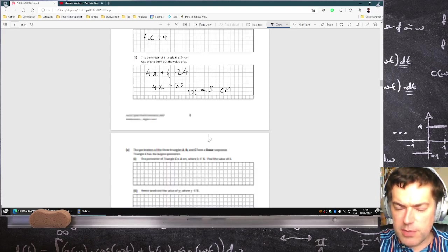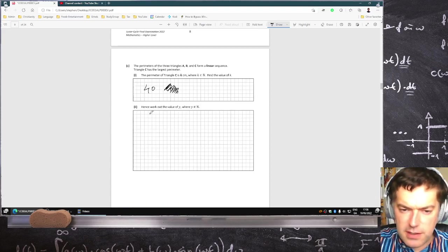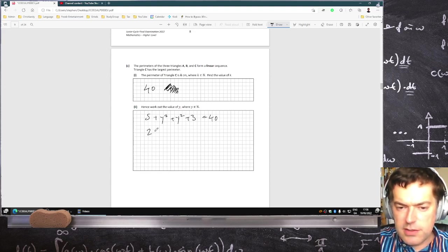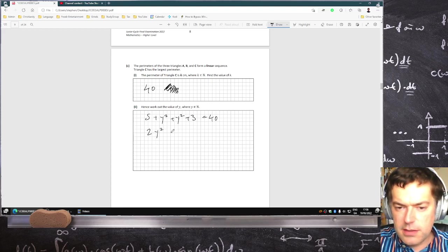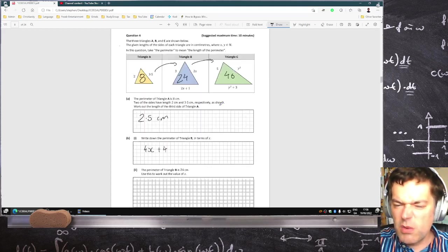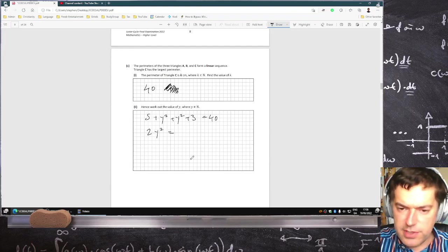5 plus y squared plus y squared plus 3. 5 plus y squared plus y squared plus 3 equals 40. So that's 2y squared equals... Oh, interesting. There's no y in it. Huh. So it's not quite a proper quadratic as we're used to.